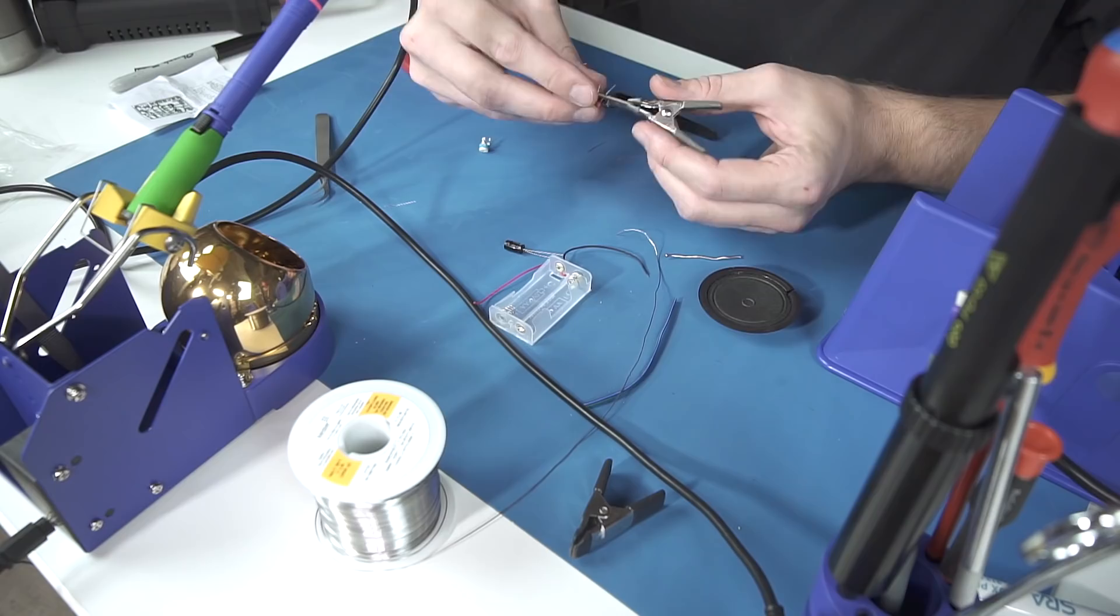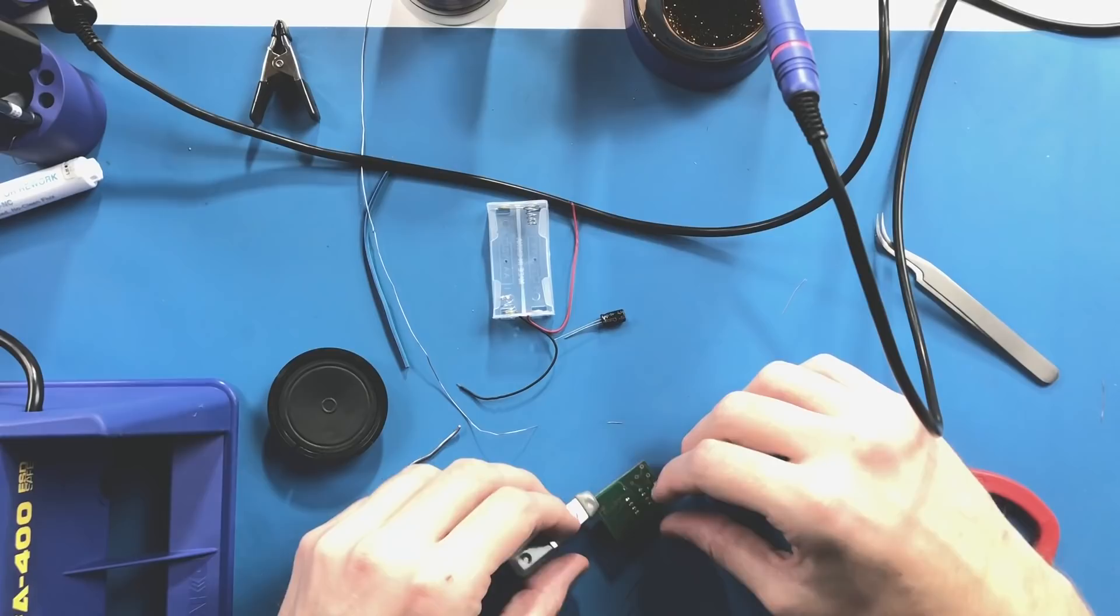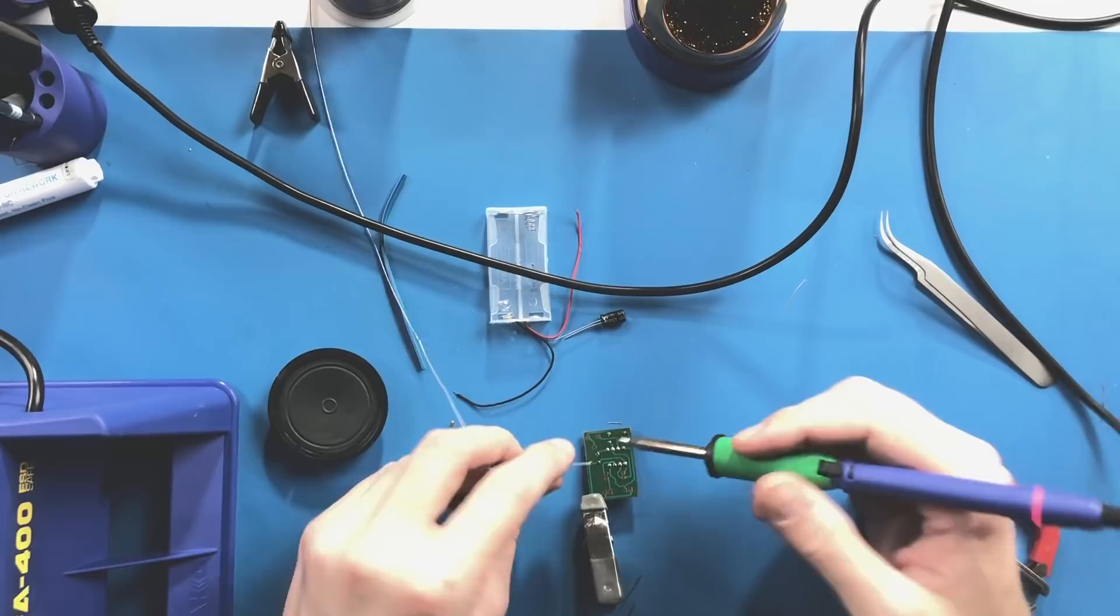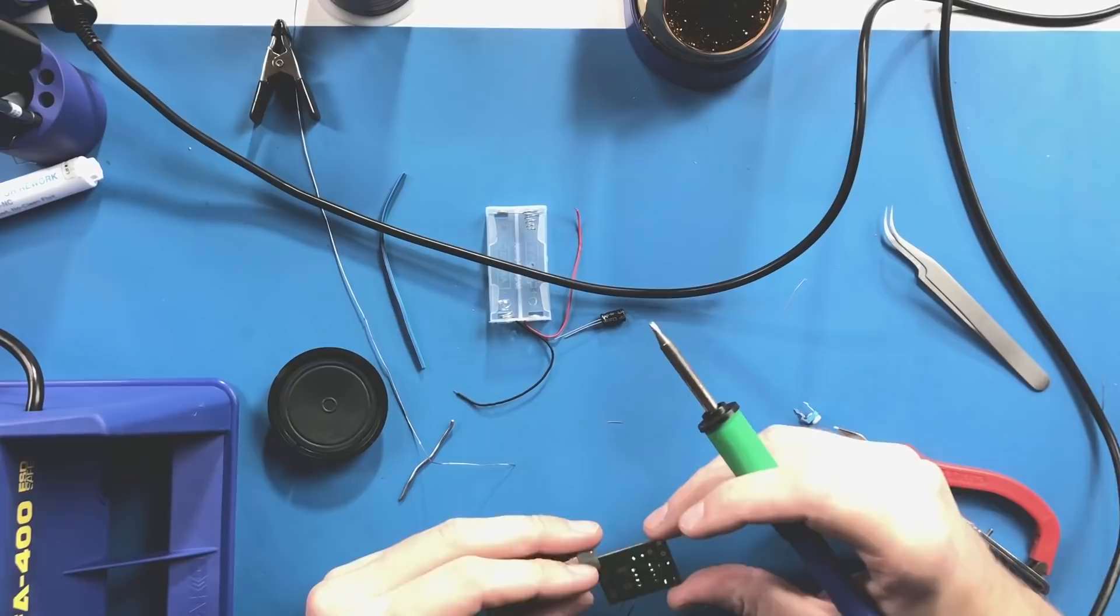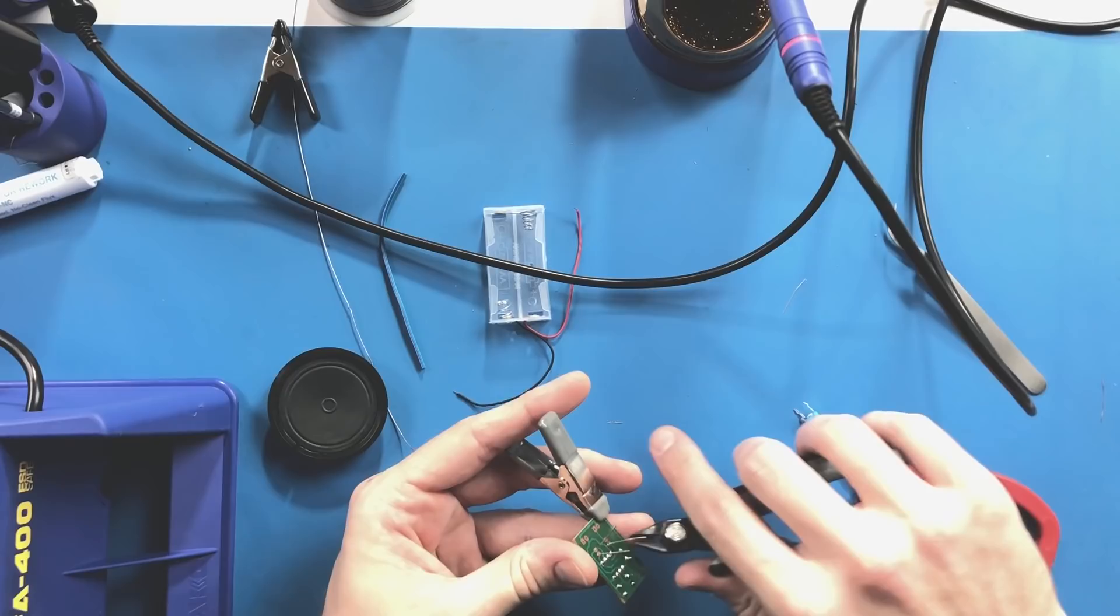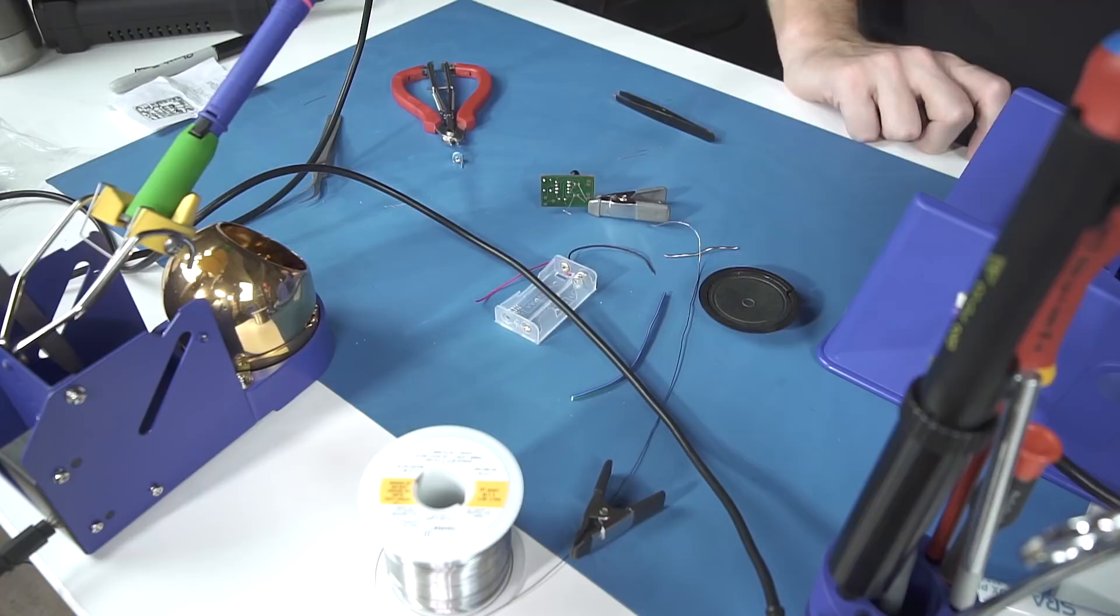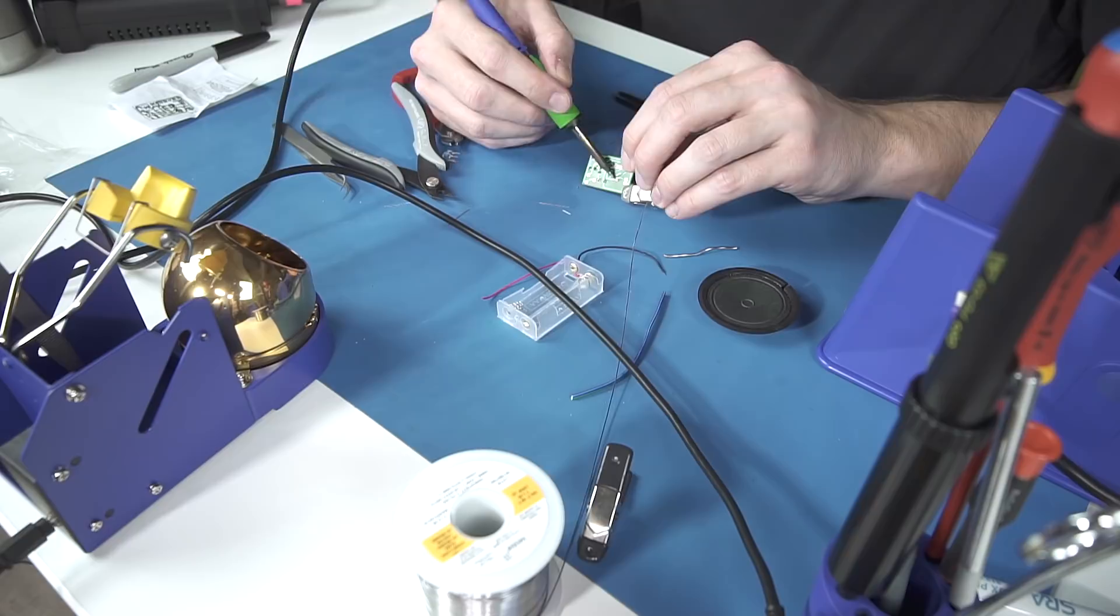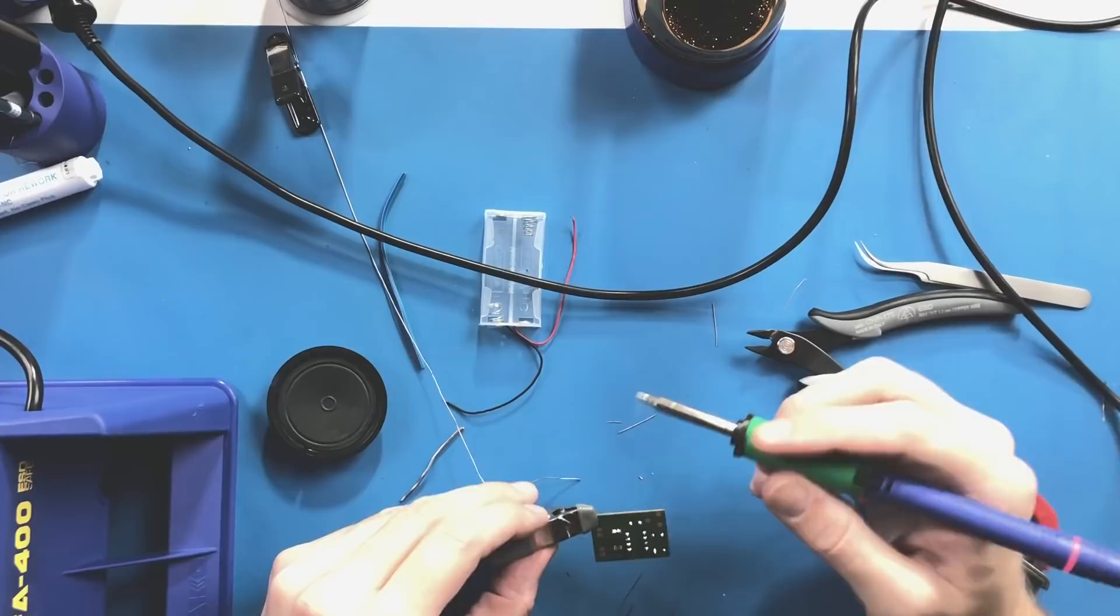Next up are our electrolytic capacitors, and these are polarized, so we need to look for the shorter leg which indicates the negative. That's also marked with a band or a stripe on the component. If the legs have already been cut short, pay attention putting these in. As with this example, they are next to each other on the board but physically opposite of how they're oriented. Stick them in, clip them, and solder them. You can see while I'm doing this I got a bit sloppy and bridged two legs together with a solder blob. Not to worry - just carefully reheat that, suck out the extra, and carry on.